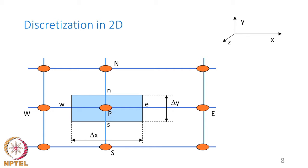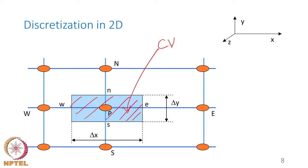The grid layout shows a rectangular control volume, hatched for clarity. Control volume faces are labeled with lowercase letters — e, w, n, s — for east, west, north, and south faces. The locations where parameters are specified are given with capital letters E, W, N, S, representing neighboring locations. The equation is written at the location of interest, labeled P.